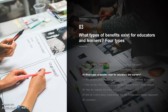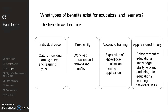Question number three: what types of benefits exist for educators and learners? According to my research, I've found four different types. There is a variety of conventional benefits which can be utilized to meet goals and maximize outcomes. Some examples include individual pace, practicality, access to training, and application of theory and practice.